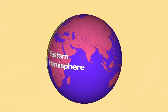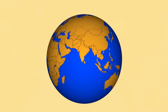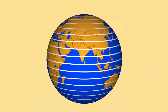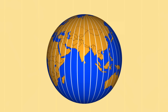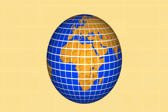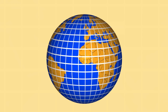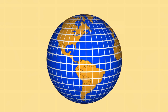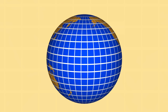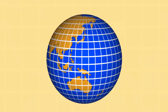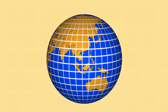The globe has some imaginary lines. The horizontal lines are known as latitudes and the vertical lines are known as longitudes. These are very helpful in locating any country or any place on the world map. All countries lie between two latitudes and two longitudes.